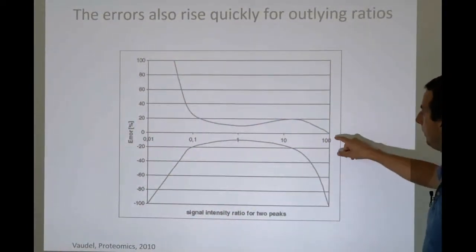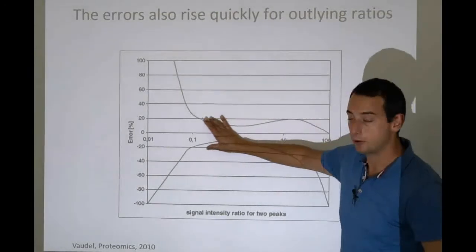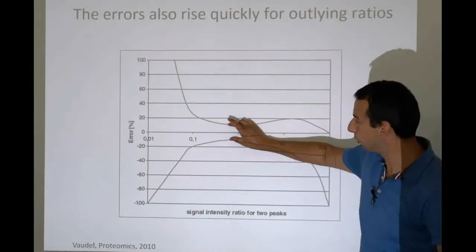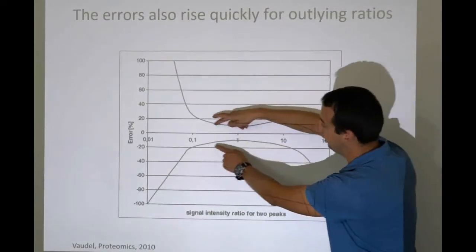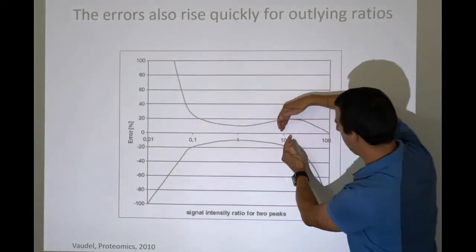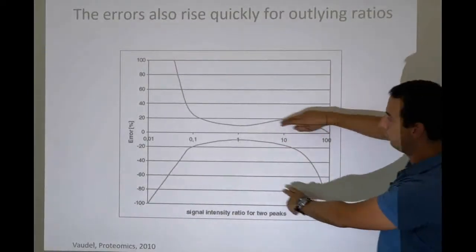And what you can see here is that this is the error on the measurement, stays more or less within boundaries close to 1, but it gets worse and worse as you go away from 1.